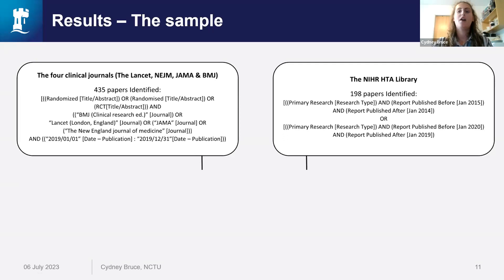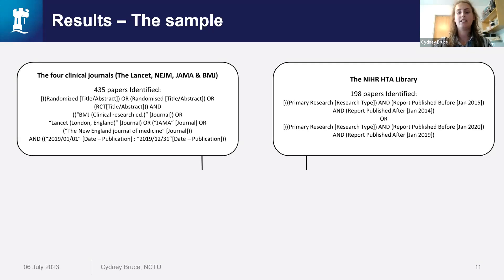We reviewed papers from the Lancet, the New England Journal of Medicine, the Journal of the American Medical Association, and the British Medical Journal. All articles were published in 2019 and contained the word 'randomised' — spelt with either an S or a Z — or 'RCT' in the title or abstract. To widen the scope, the National Institute of Health Research's Health Technology Assessment Library was also included, using publications labelled as primary research in 2019. The Cialino review was conducted in the initial four journals, so we also extracted the 2014 papers from the HTA library to allow comparisons.